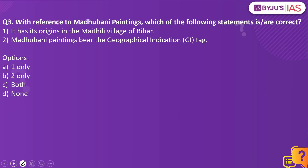Now let us look into the next practice question. With reference to Madhubani paintings, which of the following statements are correct? It has its origins in the Maithili village of Bihar. Madhubani paintings bear the geographical indication status. Which of the statements are correct? The answer to this is both.